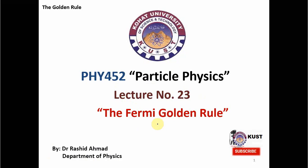As we know that in particle physics, there are two important experimental probes: decays and scatterings. In both of these, we have to calculate important parameters — the decay rate and the scattering cross-section. The decay rates and scattering cross-sections are usually very cumbersome or difficult to calculate, but with the Fermi-Golden Rule, it becomes tractable and easy to calculate both.